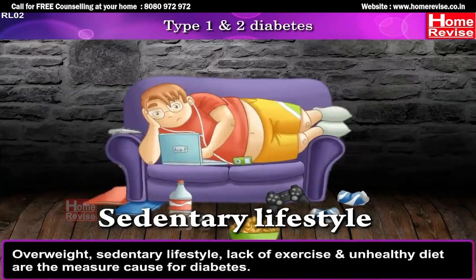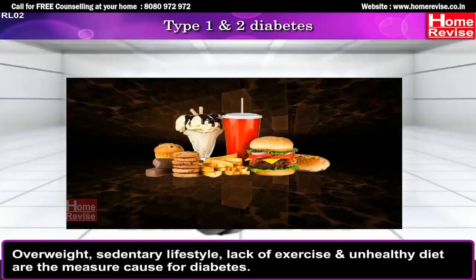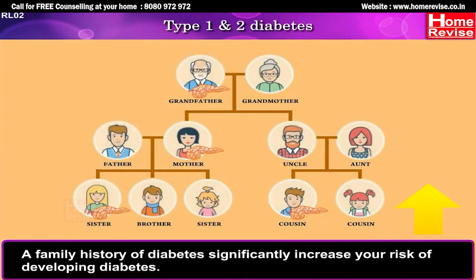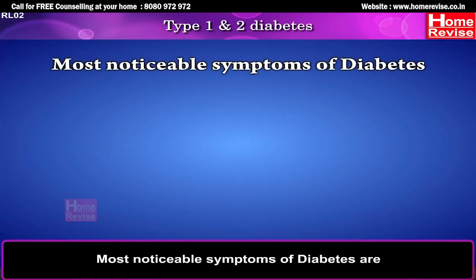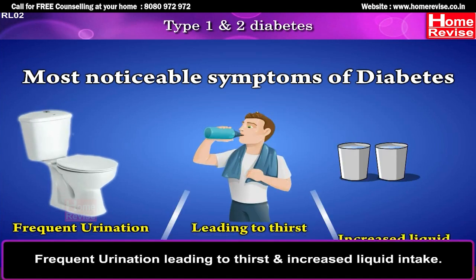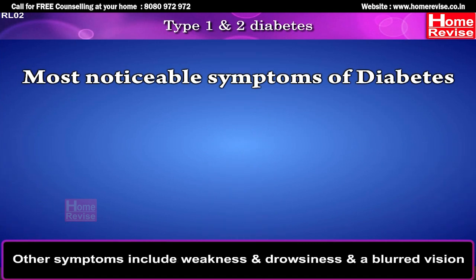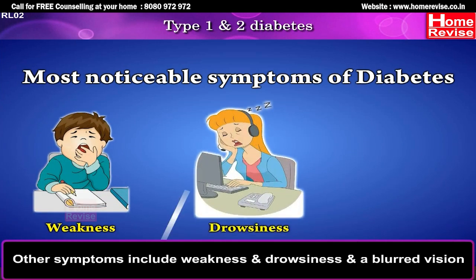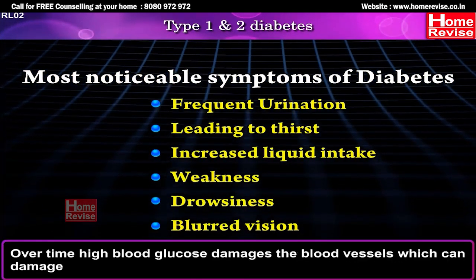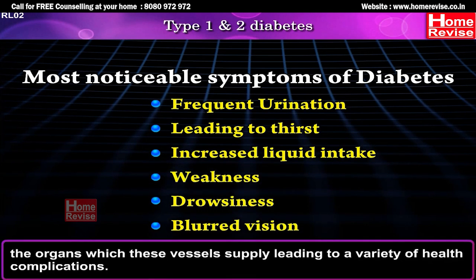Overweight, sedentary lifestyle, lack of exercise, and unhealthy diet are other major causes of diabetes. A family history of diabetes significantly increases your risk of developing diabetes. The most noticeable symptoms of diabetes are frequent urination leading to thirst and increased liquid intake. Other symptoms include weakness, drowsiness, and blurred vision. It is important to catch diabetes early, as over time high blood glucose damages the blood vessels, which can damage the organs these vessels supply, leading to a variety of health complications.